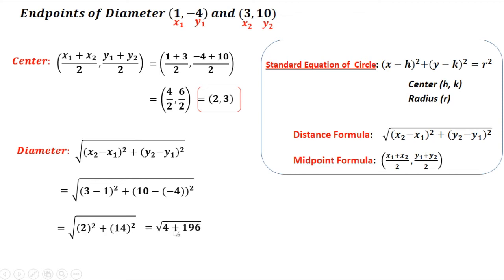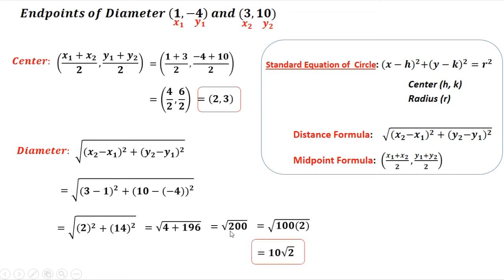Continuing to simplify: 2² = 4, and 14² = 196. Adding: 4 + 196 = square root of 200. Reducing the radical, 200 = 100 × 2, and since the square root of 100 is 10, the square root of 200 equals 10√2. This is the length of the diameter.